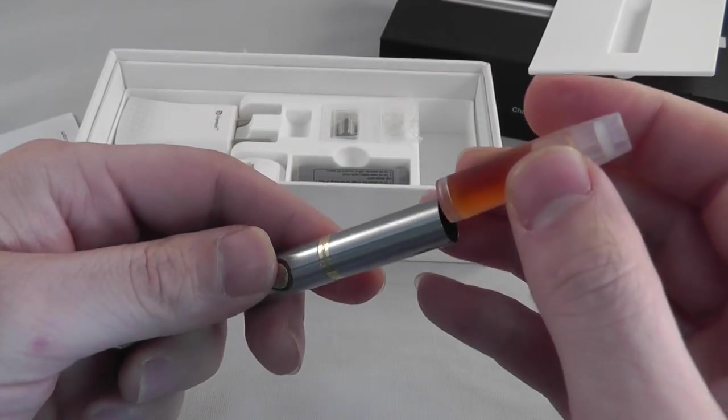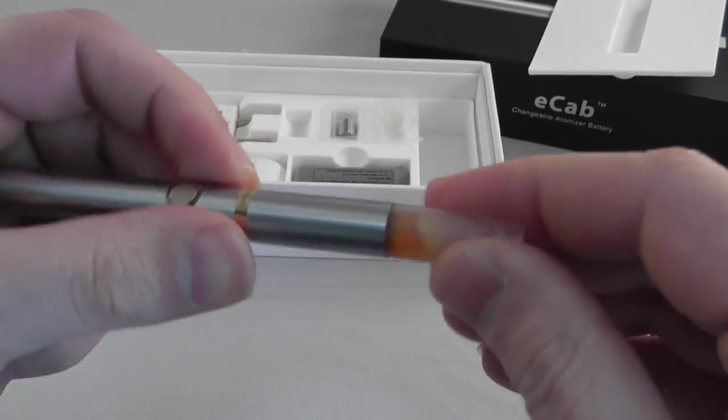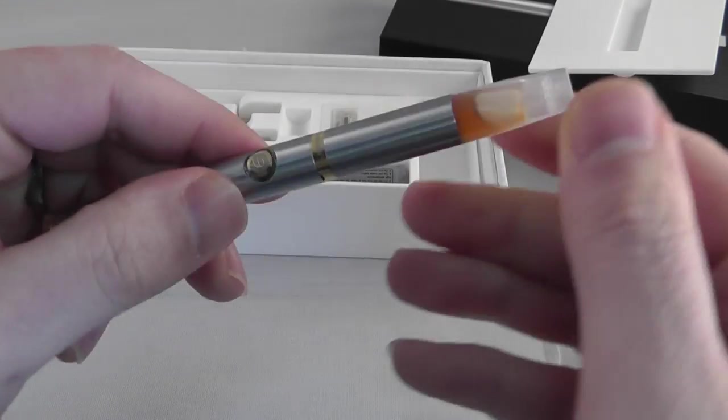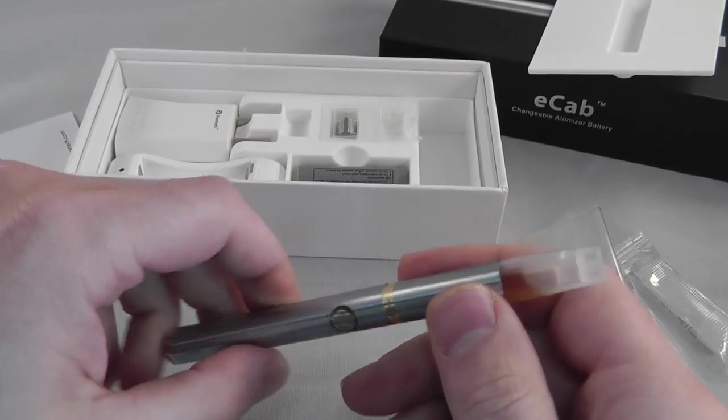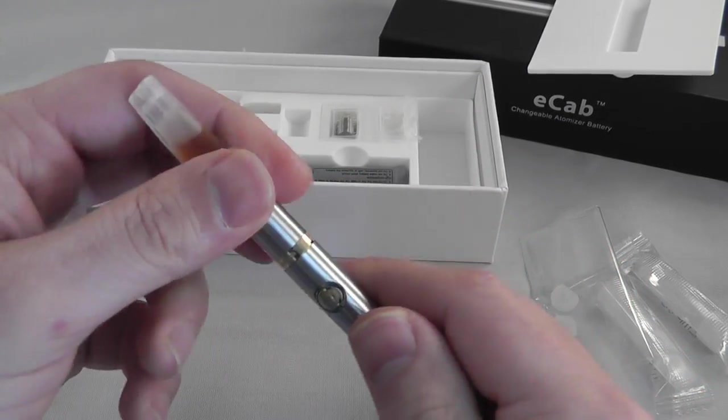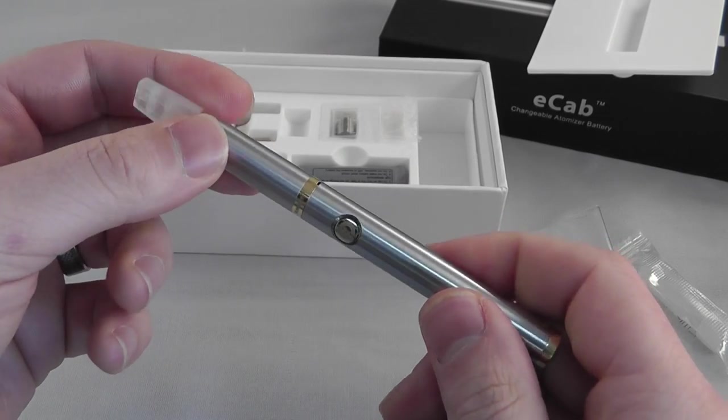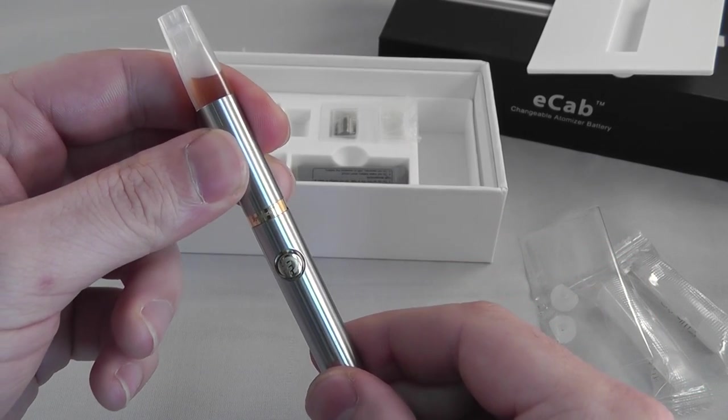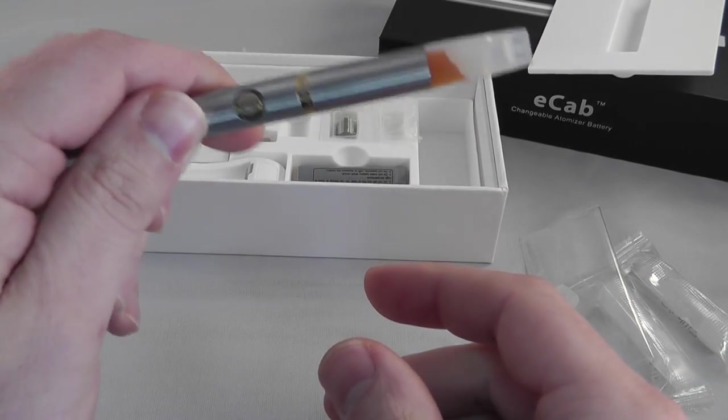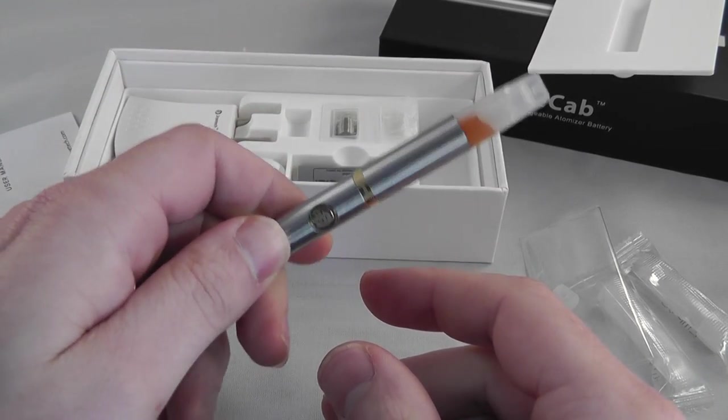Alright. So, now we want to insert this cartridge down into the E-sig. And whenever I push it down in there, I always rotate it just a little bit. It doesn't really matter for this model because those holes are already pre-drilled out. But there it is. It's all put together and it's ready to use.